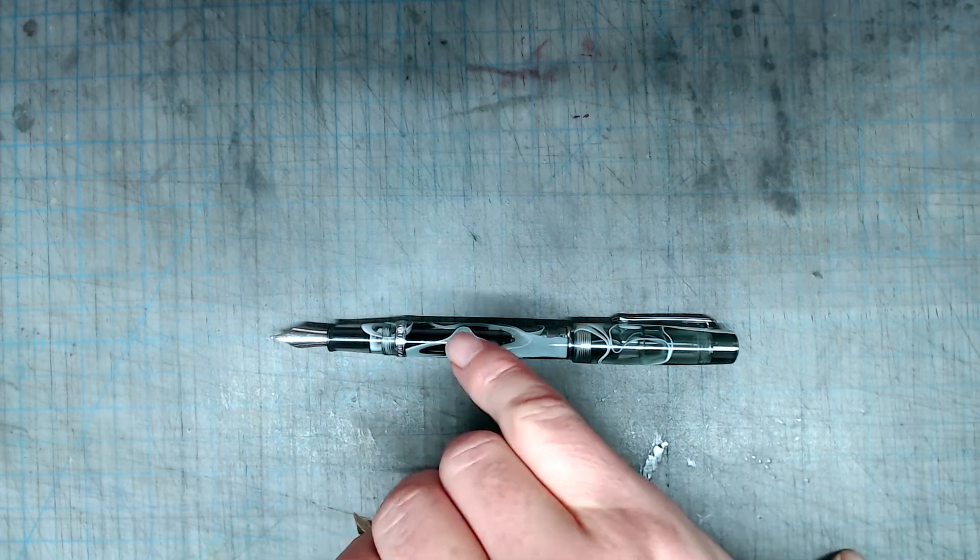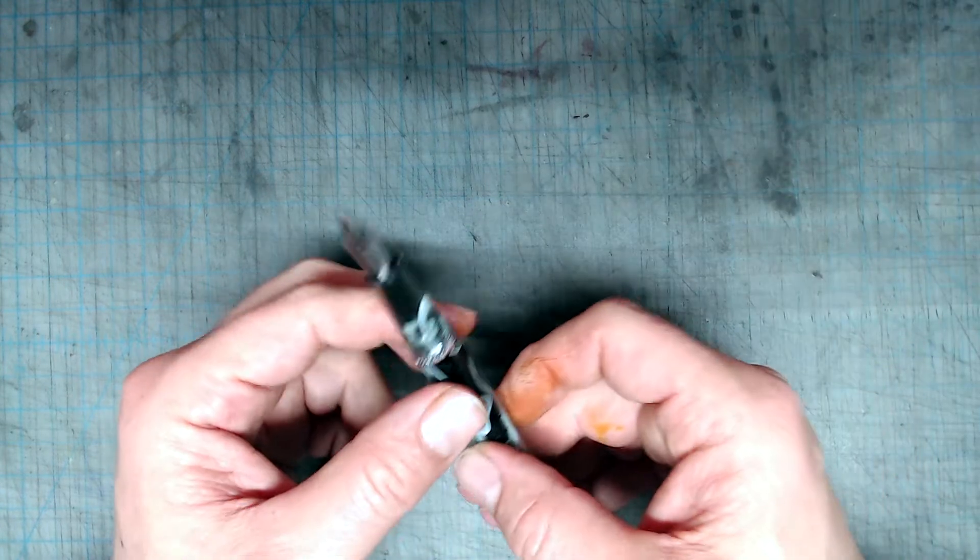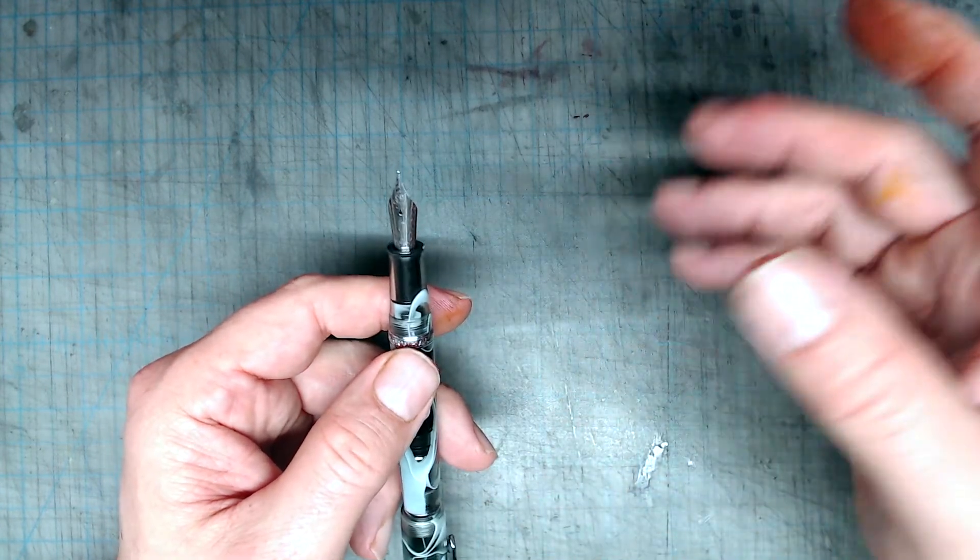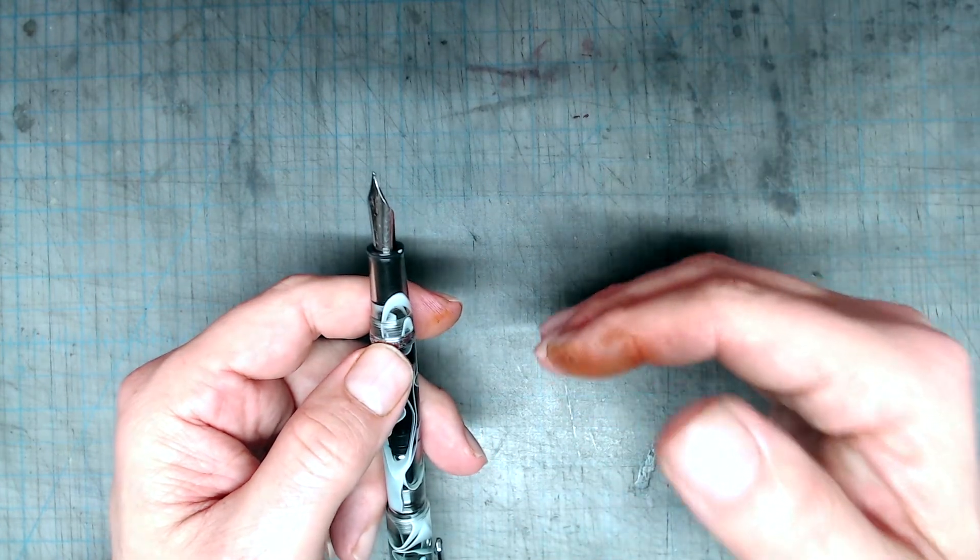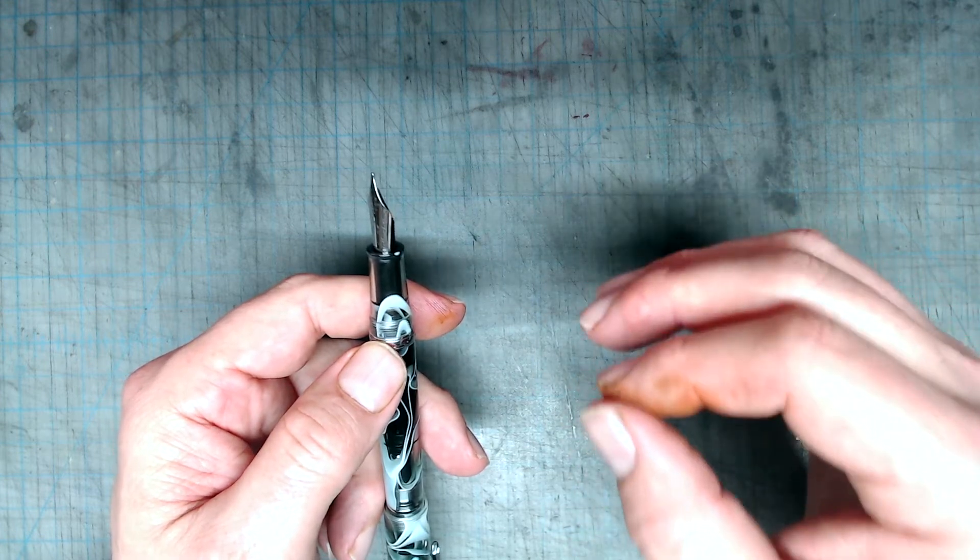An additional caveat is that this pen, sadly, uses a proprietary housing unit, so you don't have the convenience of switching units like you would with the Opus 88 or the Franklin Christoph, which use standard Jowo housing.